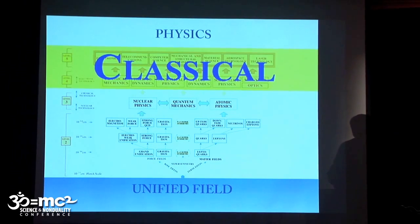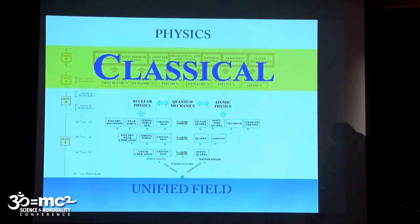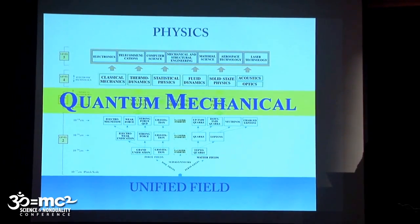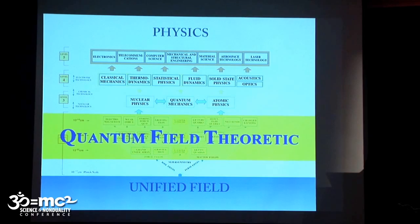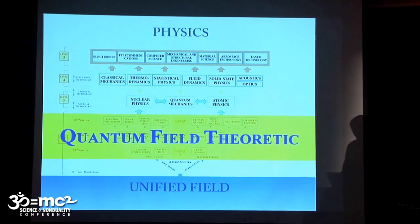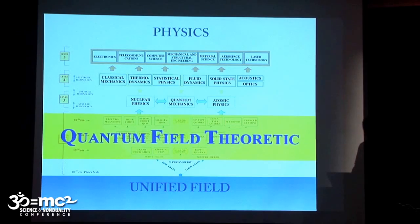So the surface level of sensory reality is typically called the classical world. Underlying the classical world is the world of the molecule and the atom, which is the realm of quantum mechanics. Then there's the atomic nucleus and the sub-nuclear particles—that's the world of quantum field theory, relativistic quantum mechanics.